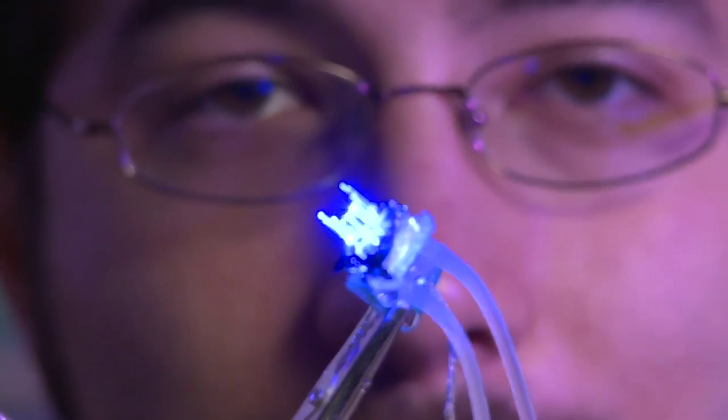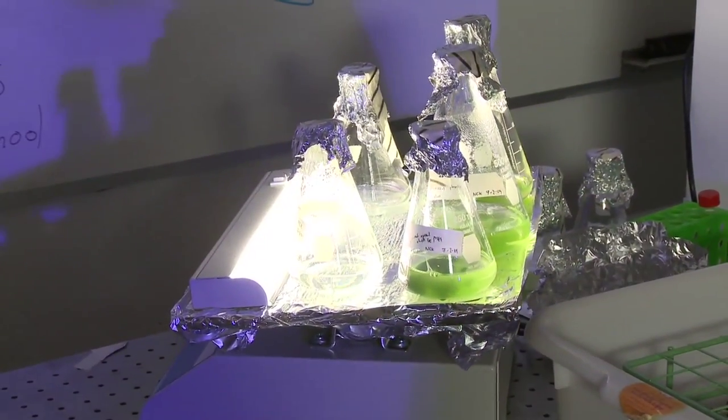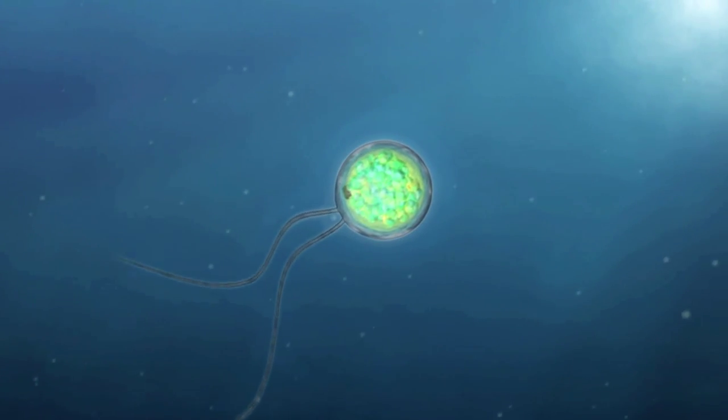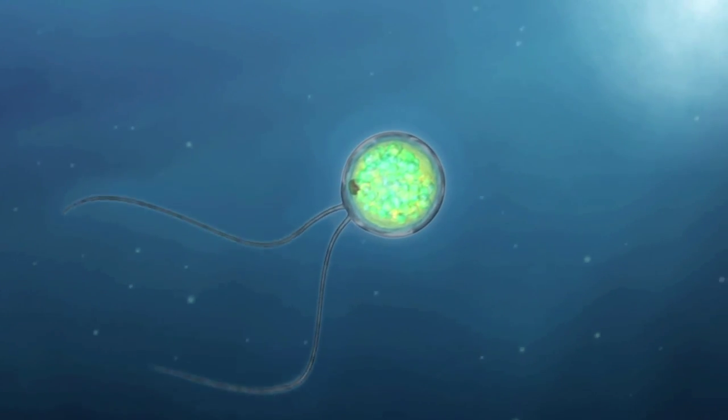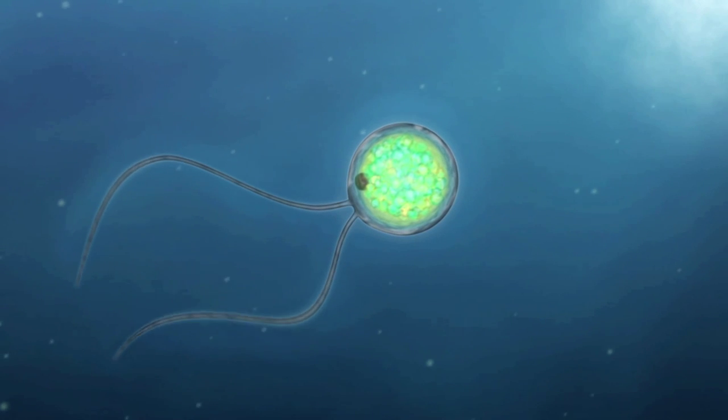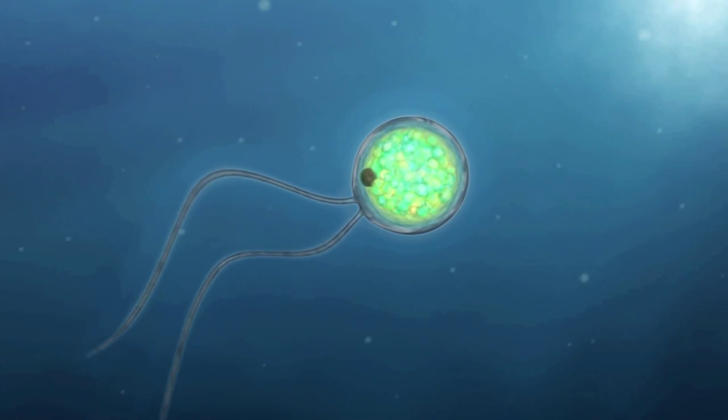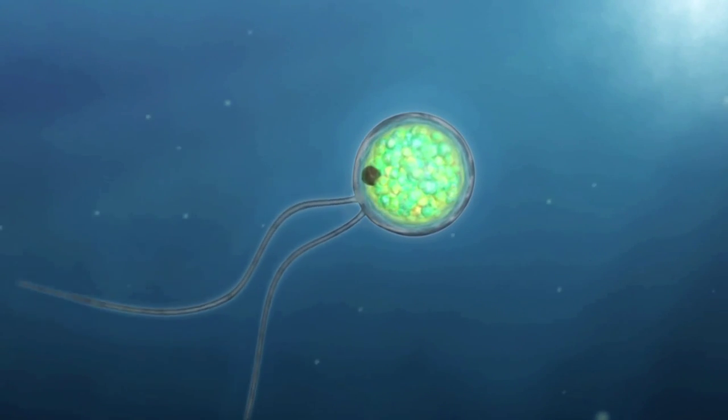Remarkably, these high-tech tools have come from microorganisms, such as this pond algae called Chlamydomonas. Chlamydomonas needs light for photosynthesis, and it swims toward light with the help of a small organelle called an eye spot.